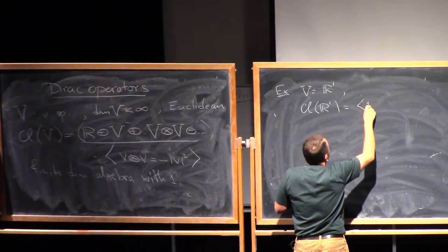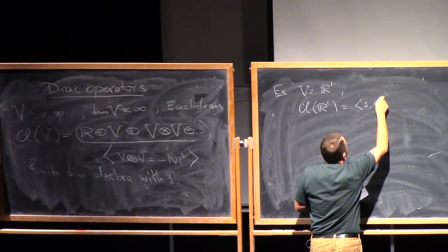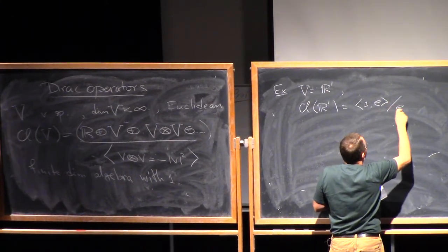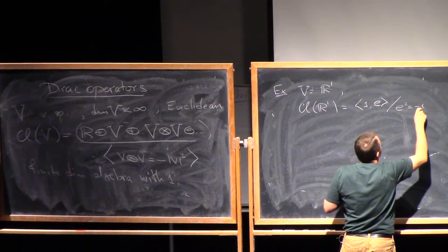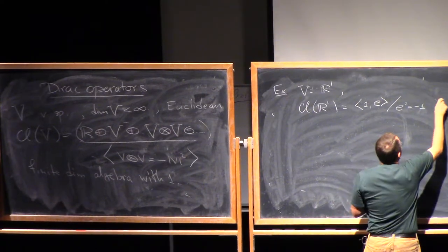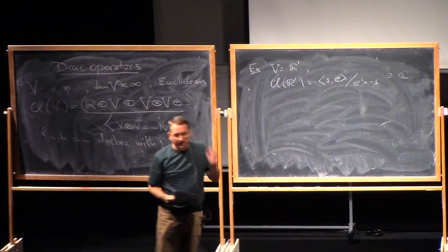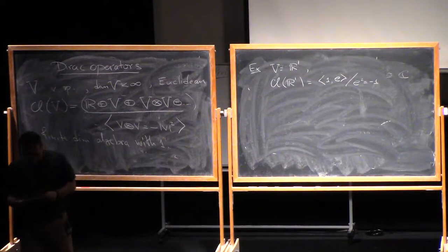1 and E, and modulo the relations, and the relation is E squared equals minus one. But this is clearly just the algebra of complex numbers. So something that you know and love.